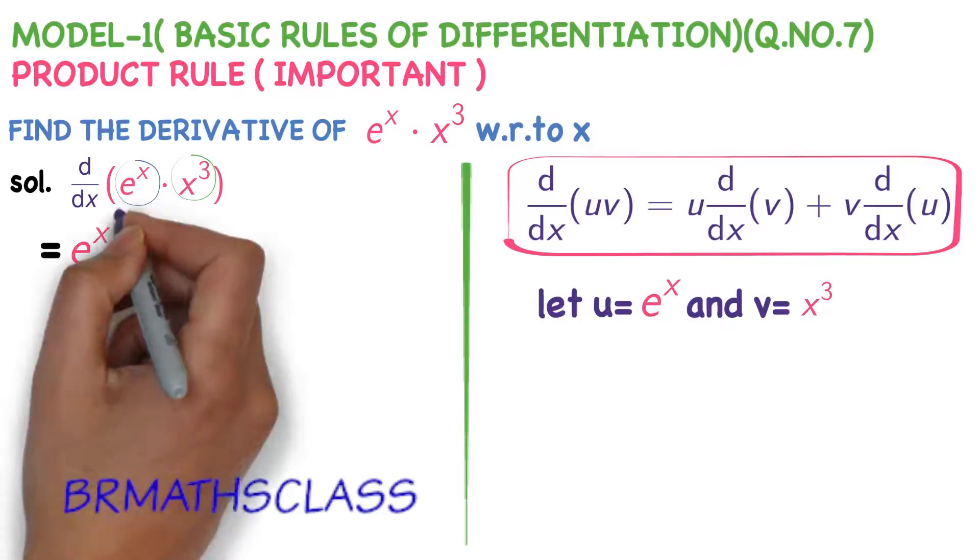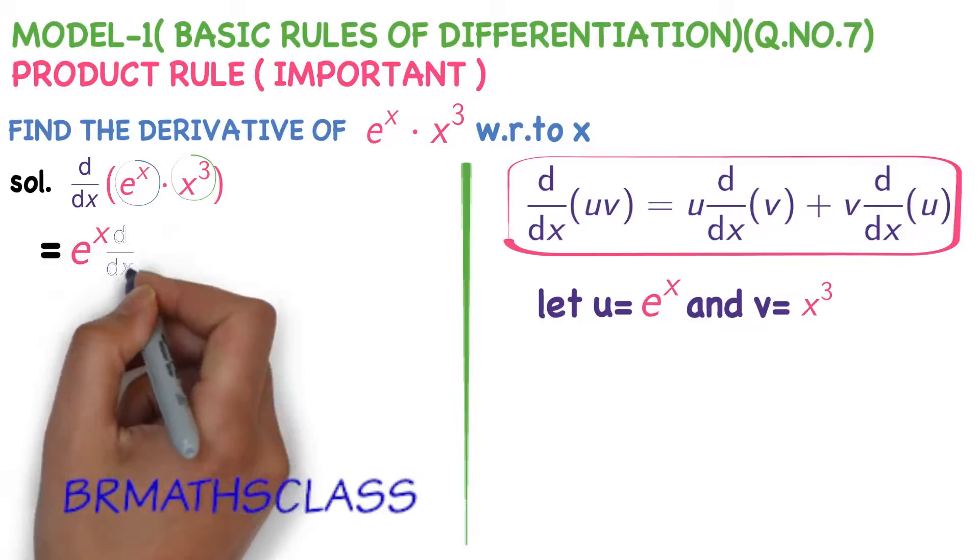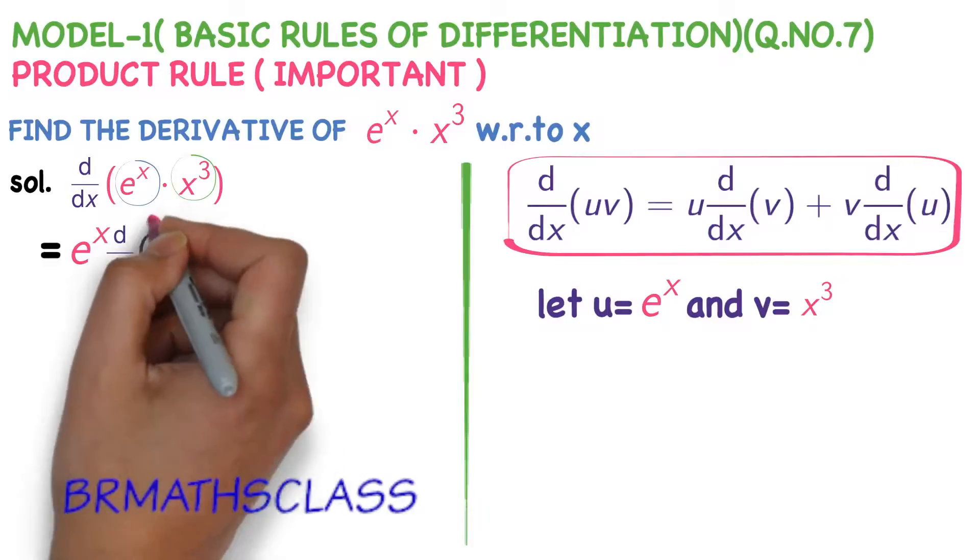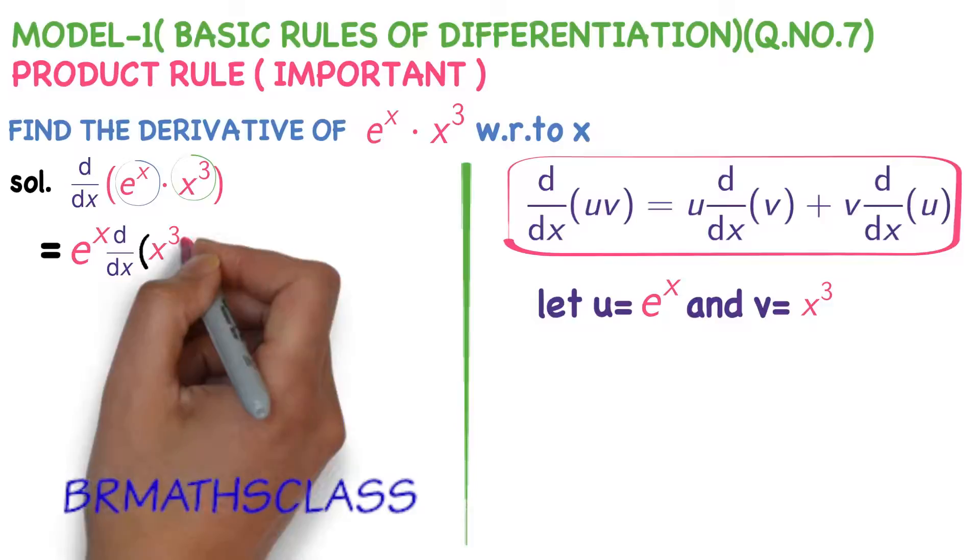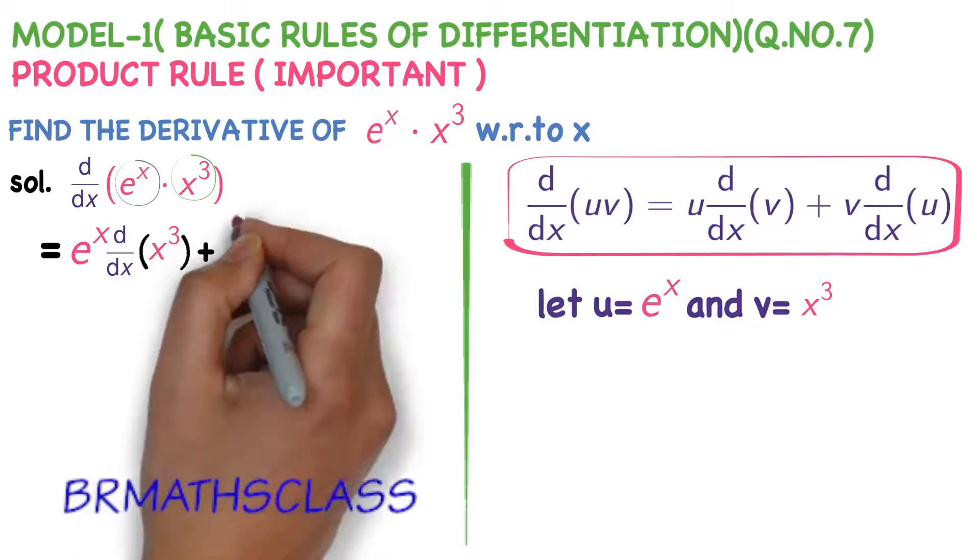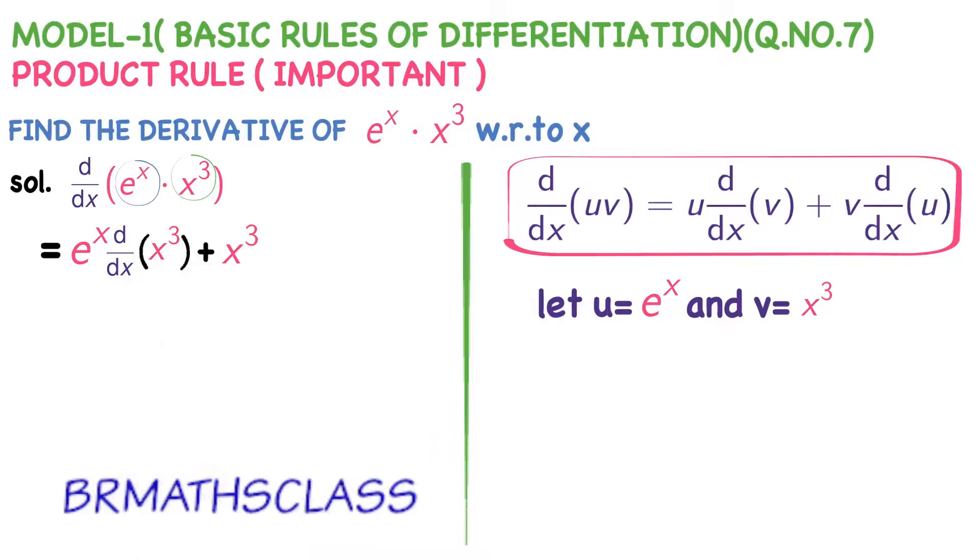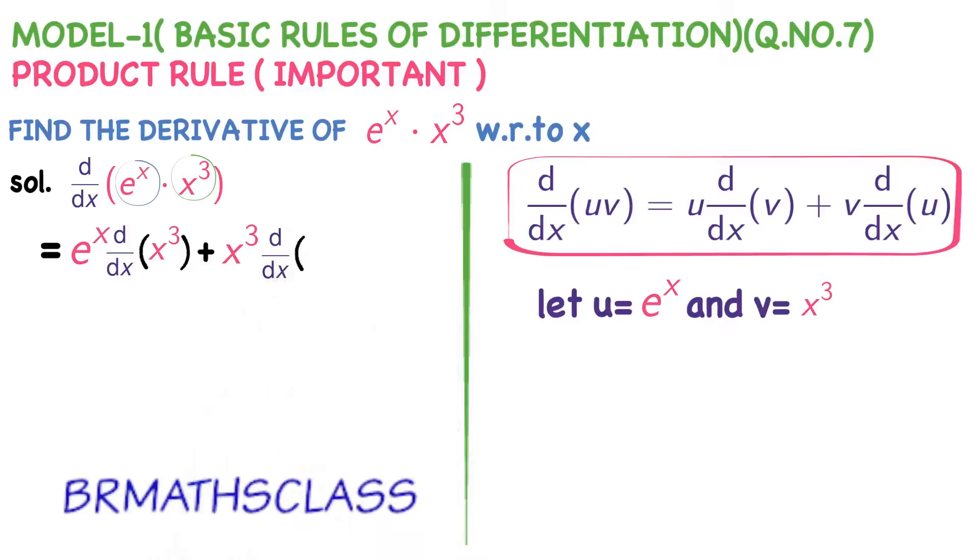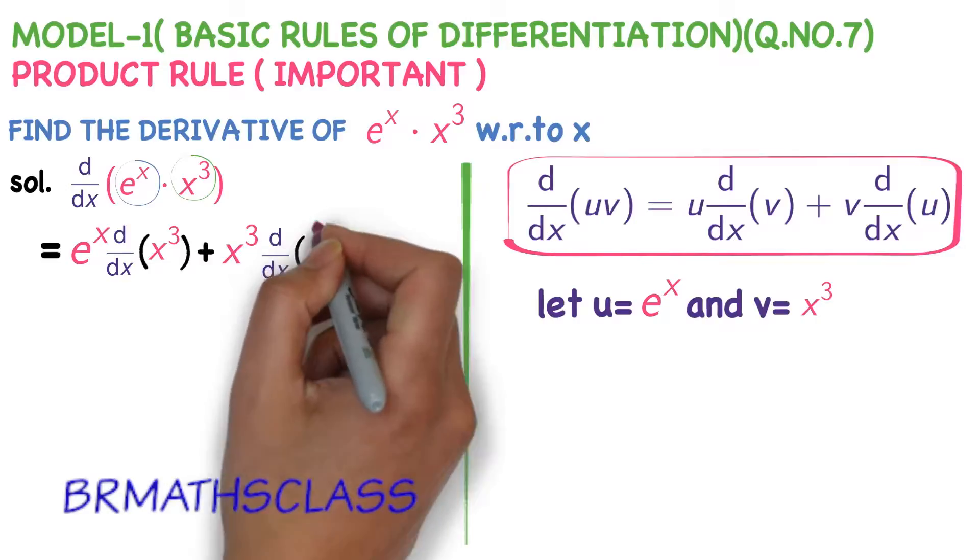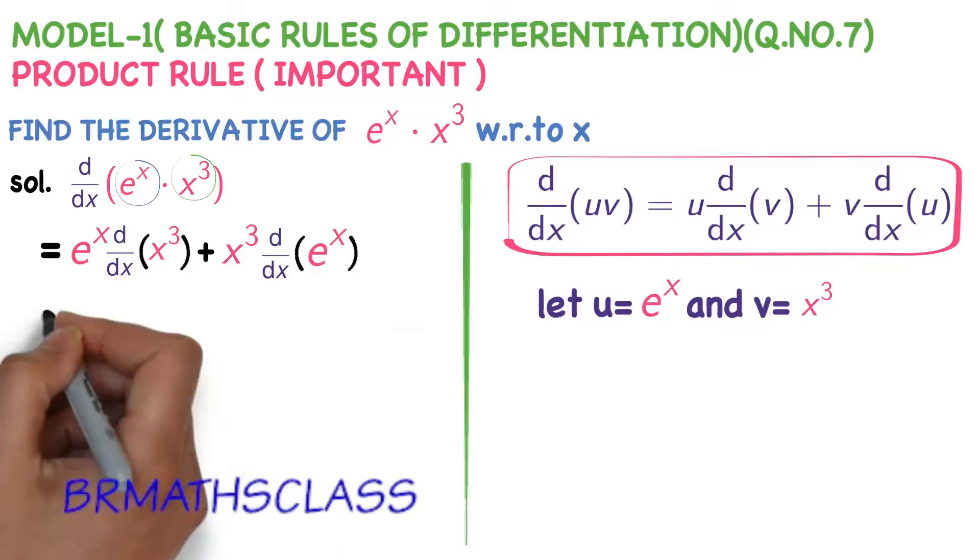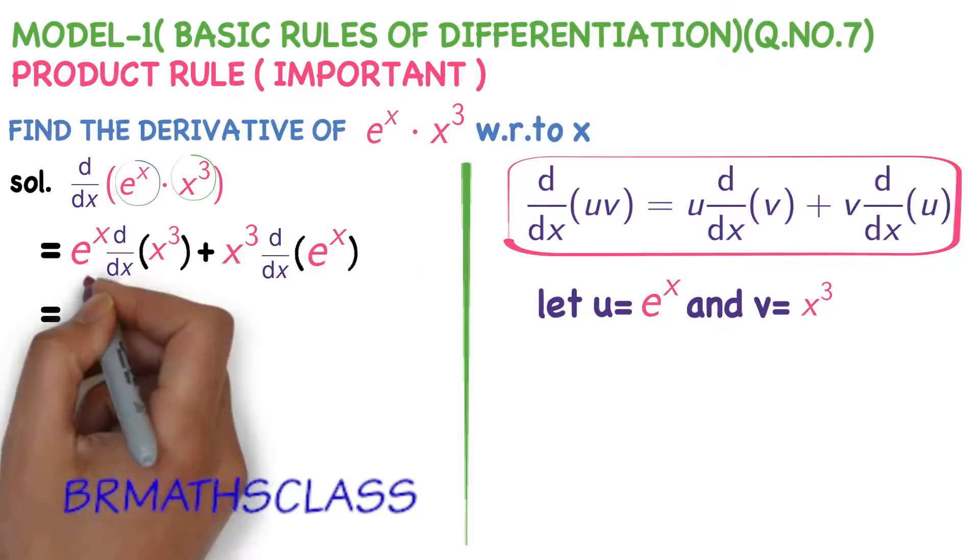u means e power x into derivative of v. What is derivative of v? Derivative of x cube. Plus, observe the formula. v. What is v? x cube into derivative of u. What is u? Derivative of e power x. It's very easy formula actually. u into derivative of v plus v into derivative of u.